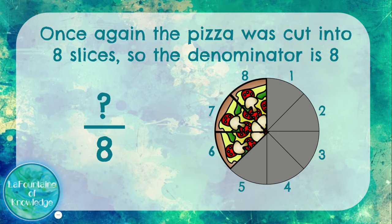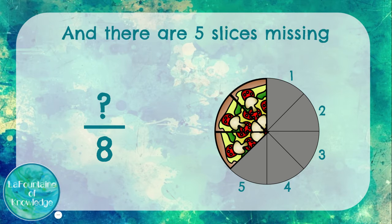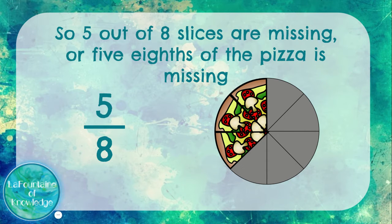But this time, I'm considering the missing pieces. Five slices are missing, so the numerator is five. Five out of eight slices are missing, or five-eighths of the pizza is missing.